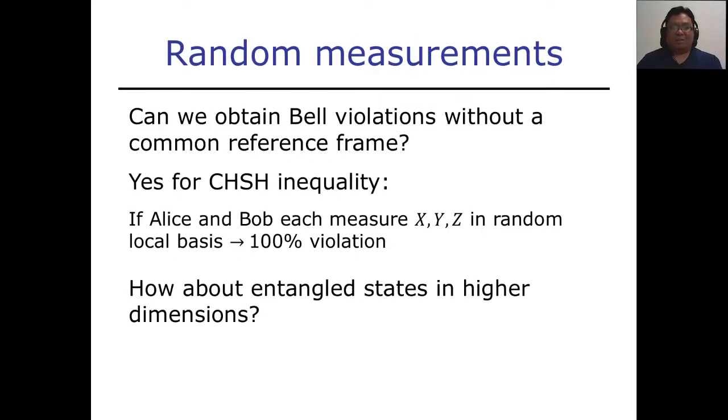In this work, we are interested in the question of whether Bell violations can be obtained by Alice and Bob who do not have a common reference. Previous work has shown that this is possible with the CHSH inequality. So if Alice and Bob share a two qubit maximally entangled state, and then they perform a randomly rotated set of Pauli operators X, Y, and Z, then this leads to a violation of 100% of CHSH.